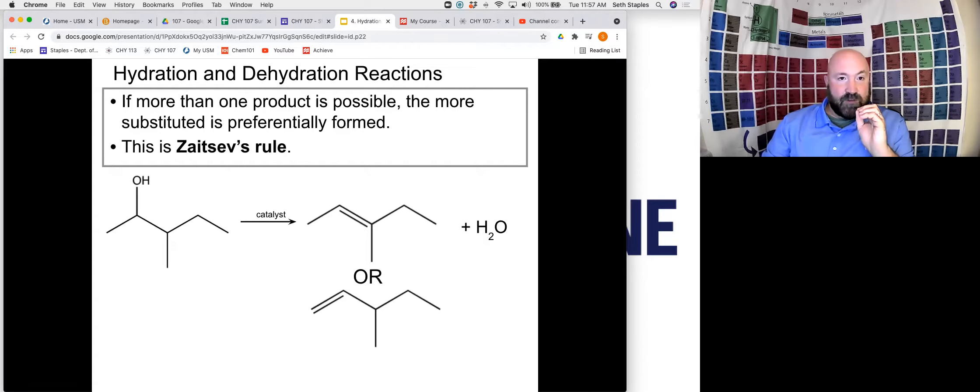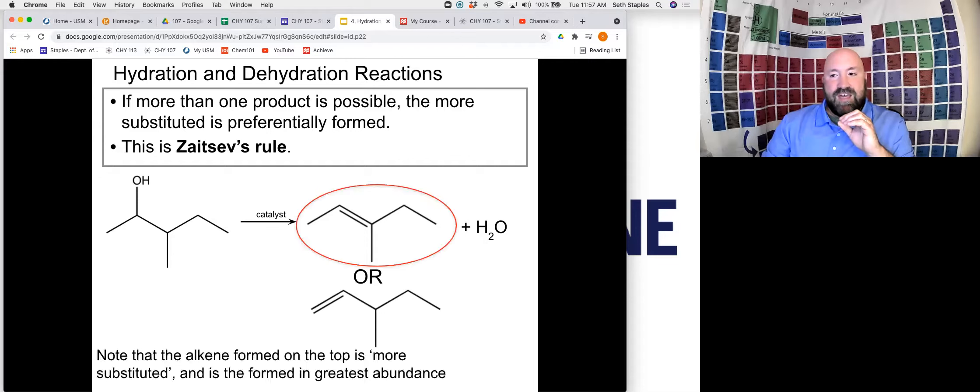If that does occur, if you end up with this sort of situation, the more substituted double bond, which would be this one, we call it more substituted because there are just more carbon groups hanging off this. This would have two H's hanging off it here. This has one H and then just a bunch of carbon groups here. So this is our more substituted version. That is the one that would preferentially form. And so that is the one that we would see more of. That's called Zaitsev's rule. It's something that those of you that have gone to organic chemistry will see this in a bit more detail if you are going on to that course as you study some of these reactions in more detail.